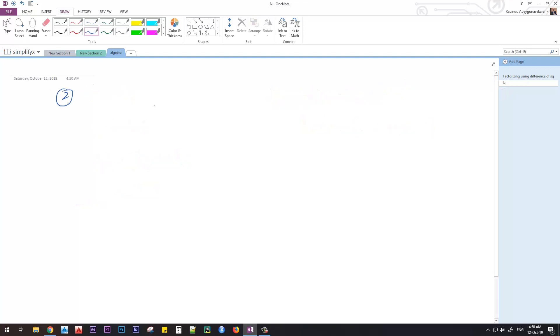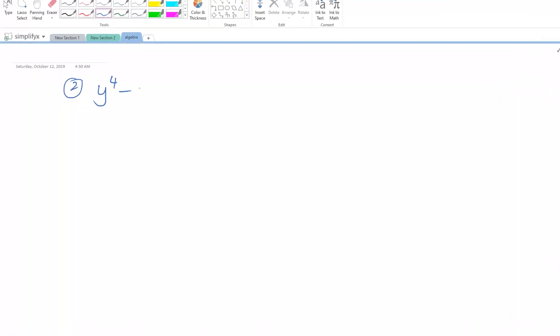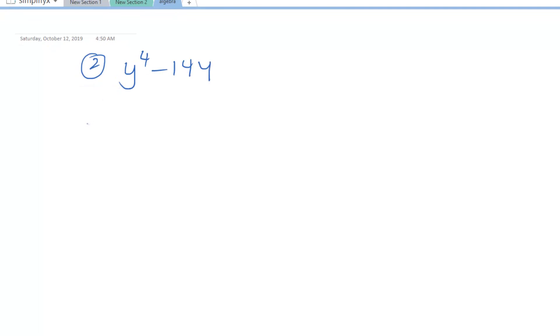Here we are asked to factorize this expression: Y to the power 4 minus 144. When we get a problem like this, we need to get it in the form of A squared minus B squared. That is what the theory says.